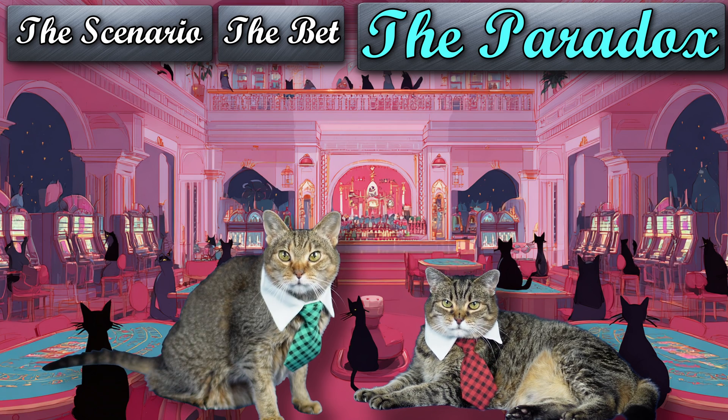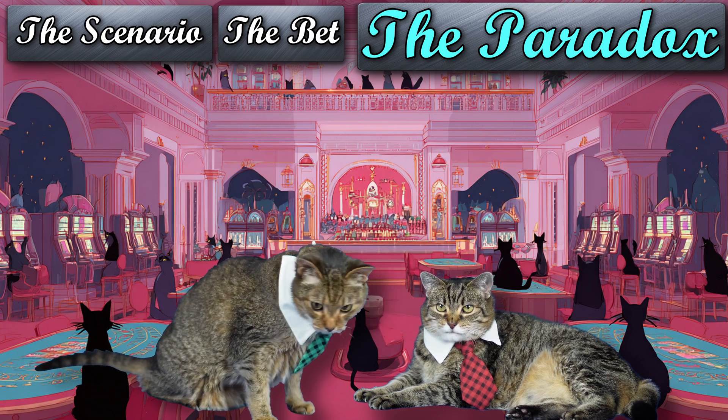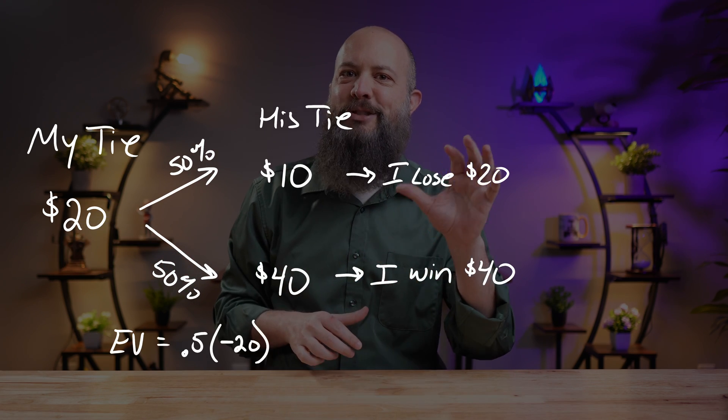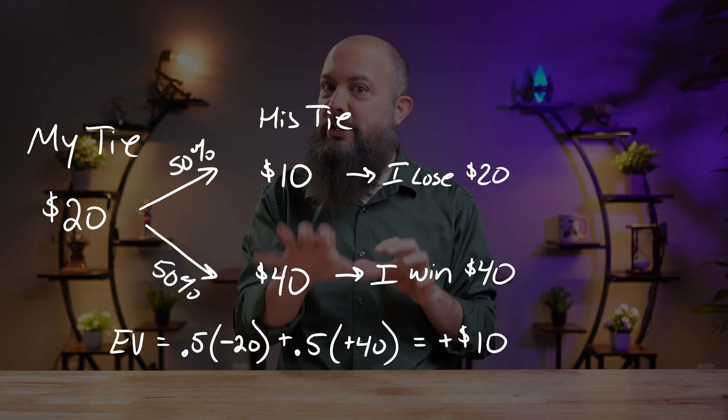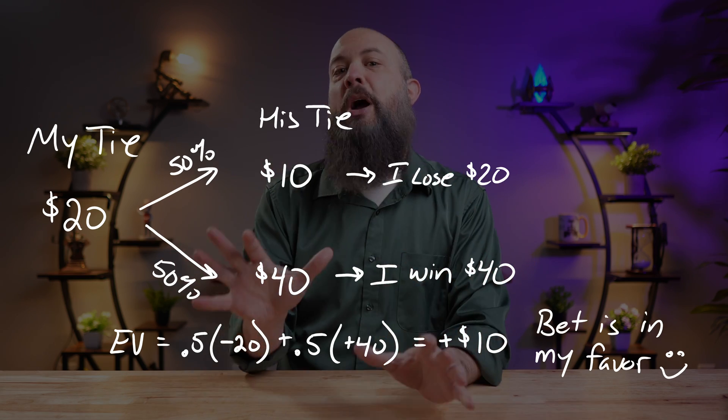Wait. Why do you look so confident? This bet can't be in both our favor. It's a zero-sum game. Now, normally for gambling problems, anything with probability — plugging in numbers is usually a great way to develop some intuition. So it seems like Serenity's approach should work. But in this case, it actually is what leads to the paradox.